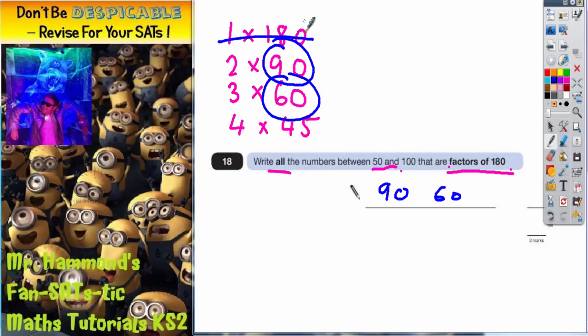But you can see what happens. These numbers are now coming down, and 45 has dropped below 50. So if I keep going, the numbers are going to drop even further. If it's already gone below 50, there's no point going any further. So the only answers we're looking for are 90 and 60.